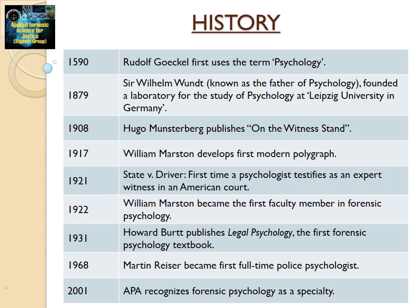History. In 1519, Rudolf Gockel first used the term psychology. In 1879, Sir Wilhelm Wundt, also known as the father of psychology, founded a laboratory for the study of psychology at Leipzig University in Germany. In 1908, Hugo Münsterberg published On the Witness Stand. In 1917, William Marston developed the first modern polygraph.